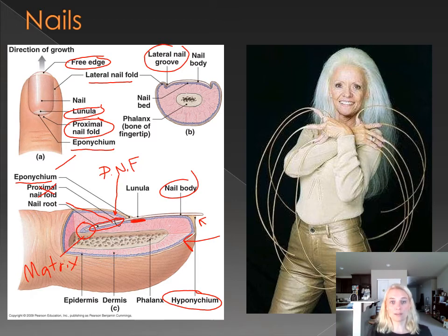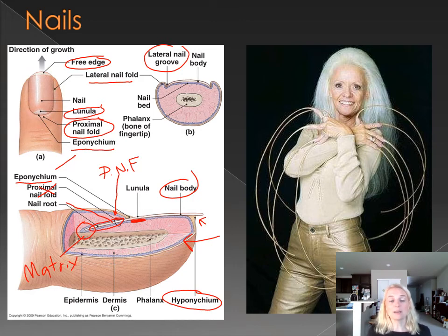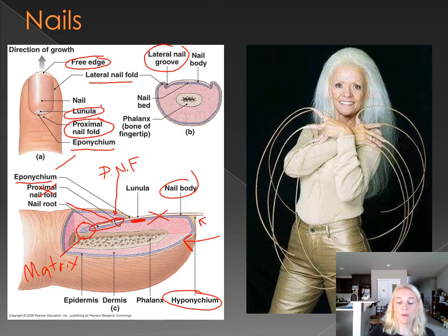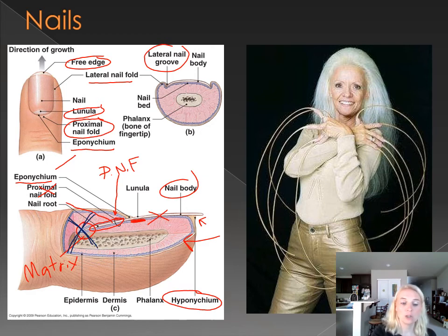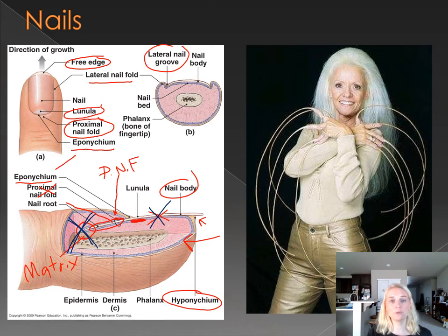Your fingernails grow from that nail matrix. If you damage the nail matrix enough, you may not grow a new nail. Some of you may have experienced trauma to your fingernail where it falls off but then grows back — in that case, you damaged the area so it detached, but the nail matrix was still intact. If trauma is severe enough to destroy the nail matrix, you will not get a regrown nail and will just get scar tissue — just like damaging the matrix in a hair follicle means no hair will grow back in that follicle.